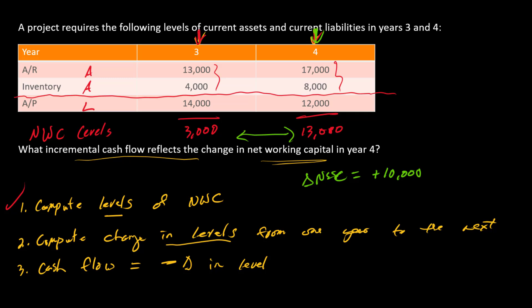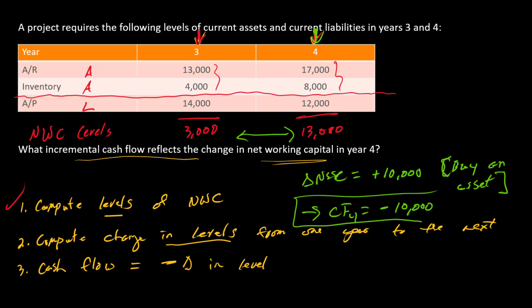When net working capital increases, think of it as buying an asset. Buying an asset requires cash, so that's a cash outflow. Therefore, the cash flow in year four equals minus 10 thousand dollars — and there is the answer.